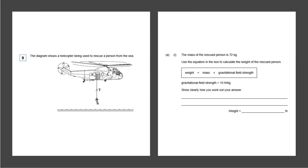Our first exam question states: the diagram shows a helicopter being used to rescue a person from the sea. The mass of the rescued person is 72 kilograms. Use the equation in the box to calculate the weight of the rescued person. We're given the equation: weight equals mass multiplied by the gravitational field strength, and the gravitational field strength is 10 newtons per kg.